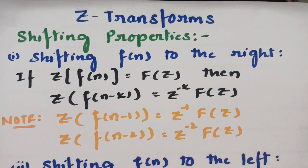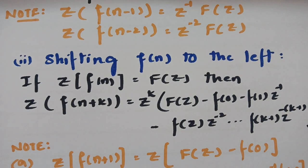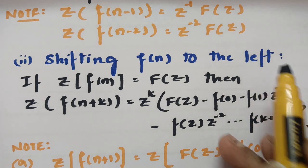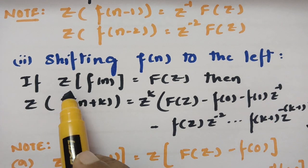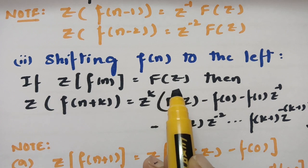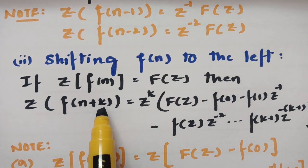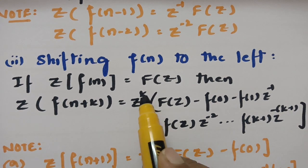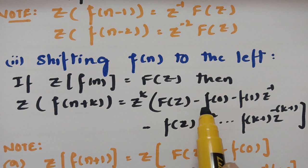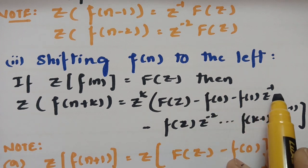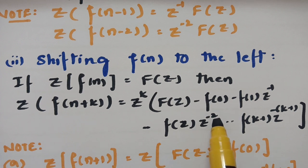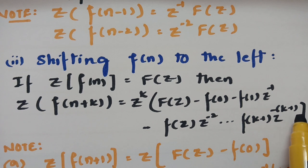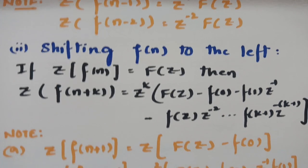Now let's talk about shifting to the left side. Suppose f(n) is shifted to the left. The Z transform of f(n plus k) is given by the recurrence formula: z^k times F(z) minus f(0) minus f(1)·z^(-1) minus f(2)·z^(-2) and so on until f(k minus 1)·z^(-(k-1)). Knowing this formula makes it very easy.